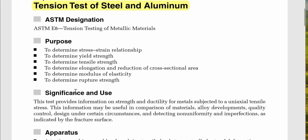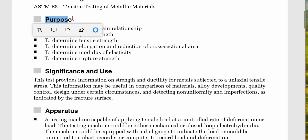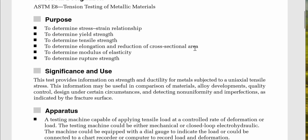Today we are going to talk about the tension test of steel. The ASTM designation is ASTM E8, titled 'Tension Testing of Metallic Materials.' It applies to steel and aluminum. The main purpose of this experiment is to determine the stress-strain relationship, yield strength, tensile strength, elongation, reduction of cross-sectional area, modulus of elasticity, and rupture strength.